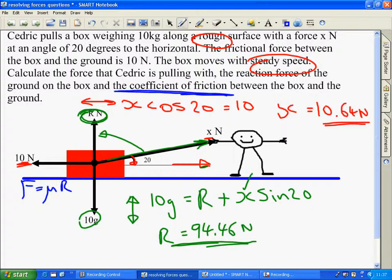We know the frictional force is 10. We don't know mu. We know that the reaction force we've just found is 94.46 newtons. So, from this, we can get that mu is equal to 0.11.